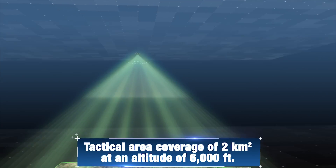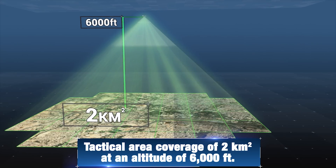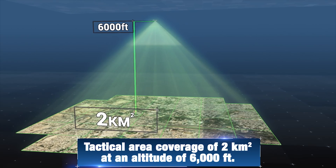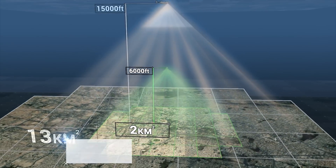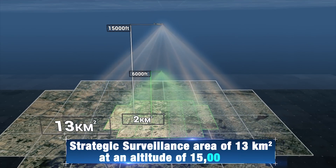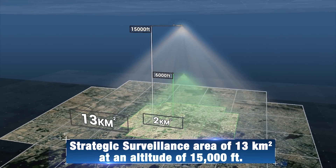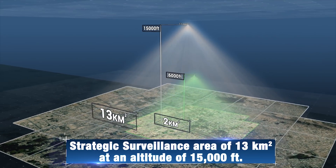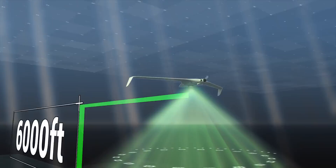A tactical altitude of 6,000 feet will provide a 2 square kilometer surveillance area. A strategic altitude of 15,000 feet will provide a 13 square kilometer surveillance area.